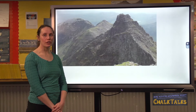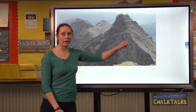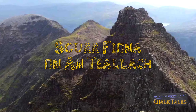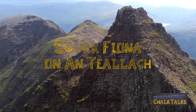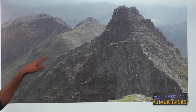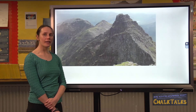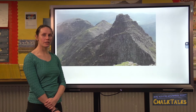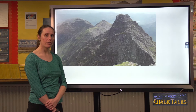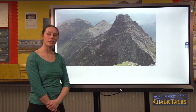Another glacial erosional feature is a pyramidal peak — a very sharp triangular peak. An example is Sgurr Fiona on An Teallach near Dundonnell. Pyramidal peaks are formed when three corries erode back into the same mountain. As the corries erode deeper and deeper into the mountain using plucking and abrasion, the top of the mountain becomes steeper and sharper. Freeze-thaw weathering also works on the top of the mountain to make it even steeper and sharper.